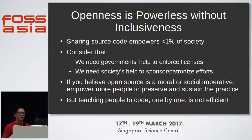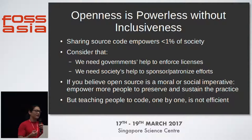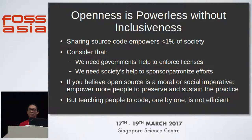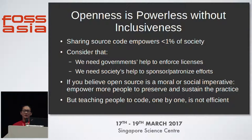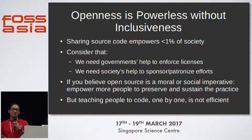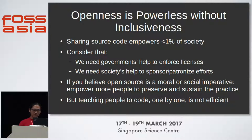At the end of the day, openness is powerless without inclusiveness. If you share your source code, you're only empowering a tiny fraction of society. We need the government's help to enforce our licenses and society's help to sponsor our efforts. If you believe open source is a moral or social imperative, you need to empower more people to preserve and sustain the practice. But teaching people to code one by one is not efficient — this should be done by a group of people who want to make sure it happens.